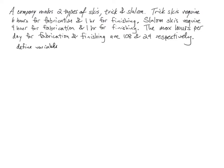There is a process here — the first step is to define variables. We will use x and y. X is the number of trick skis, and y is the number of slalom skis. We don't know how many trick or slalom skis can be produced. The second thing we want to do is find our inequality system, also called constraints. We have two different types of hours: fabrication hours and finishing hours.